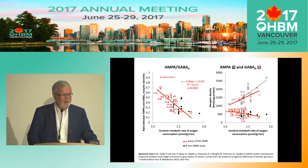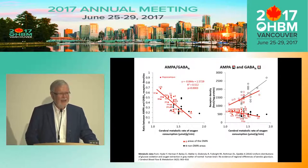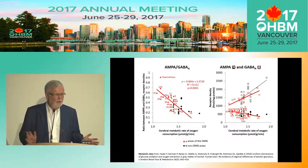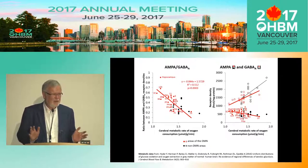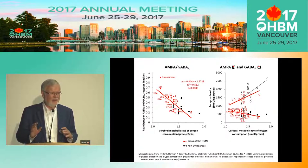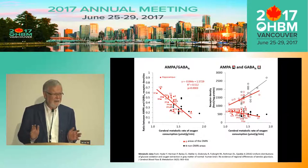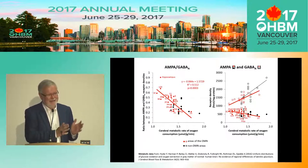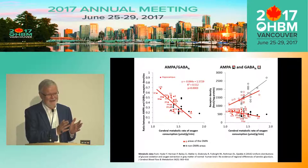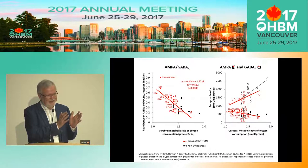I hope I could demonstrate that there is a general rule that receptor expression in supragranular, granular, and infragranular layers is completely different. The next question to solve would be how this different expression of receptor tuning in the three layers correlates with the columnar concept of cortical organization. Thank you very much.